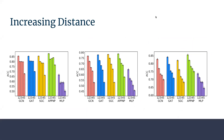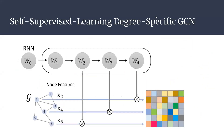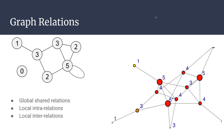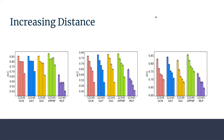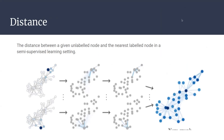The distance is the shortest path between a labeled node and an unlabeled node in a semi-supervised setting. In a graph, it is the number of hops — each edge counts as one unit. So it is not a Euclidean distance but rather the number of edges traversed along the shortest path.